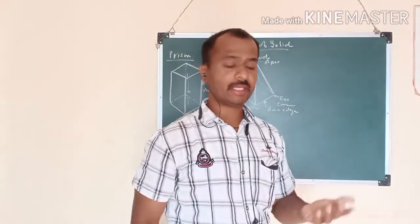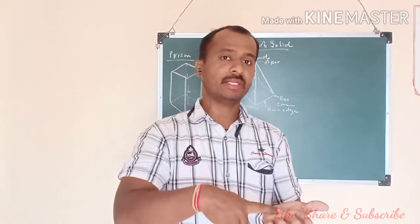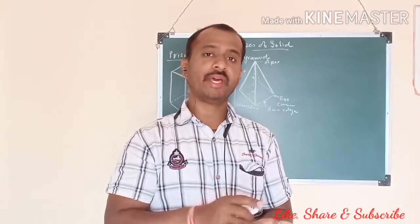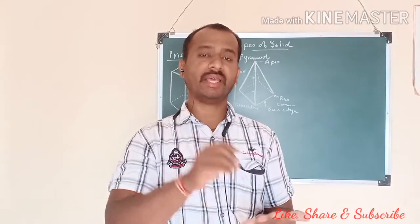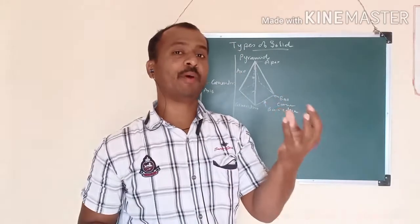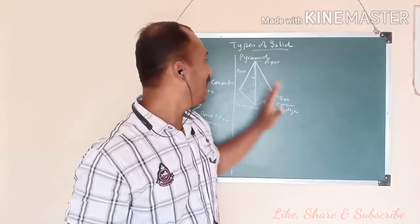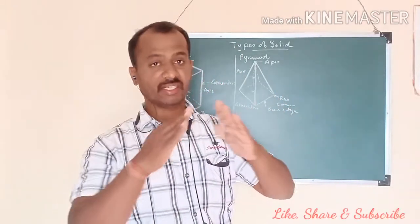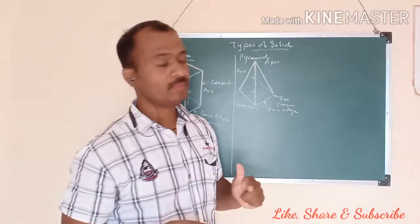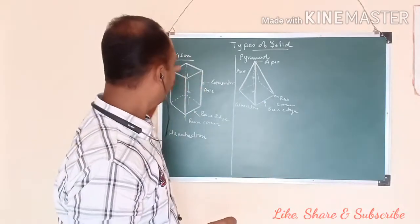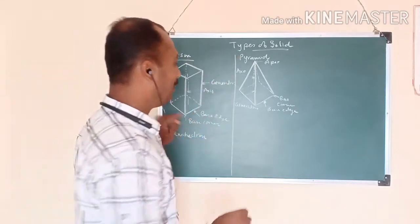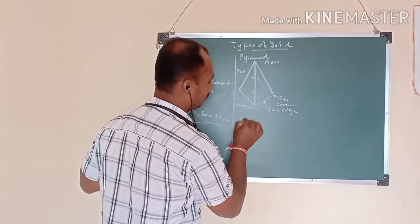In the pyramid, the base is a plane — it may be triangular, square, pentagonal, or hexagonal. The type is based on the shape of its base, and the side faces are triangles. Just as there is a hexahedron for prisms, in the pyramid there is a tetrahedron.